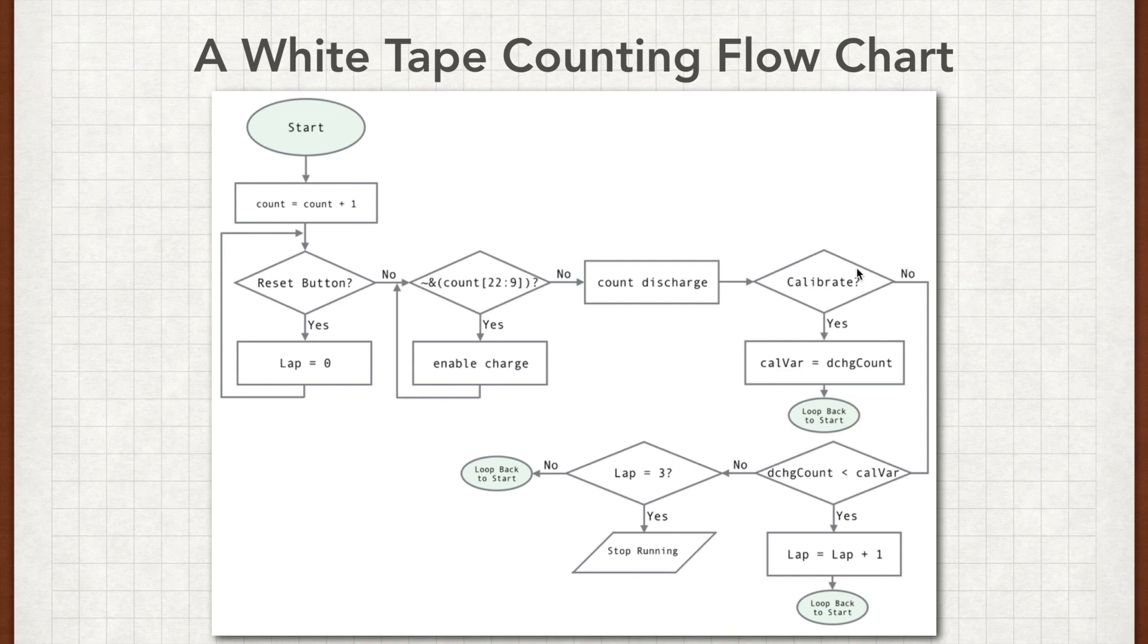Now for this actual program, we did a calibration because we wanted to be able to take different things and put it in front of the IR sensor and be able to trigger off of those things. So whether it be white tape, like in this example, or gray tape or a silver tape or something like that. So if the calibration button was pushed, then we're going to basically make a variable, a calibration variable, and we're going to say discharge count equals that calibration variable. So we'll take whatever it is we're wanting to measure. We'll put it in front of that. We'll hit the calibration button and it'll calibrate the calibration variable to whatever that material was. And it'll start back over in this loop again.